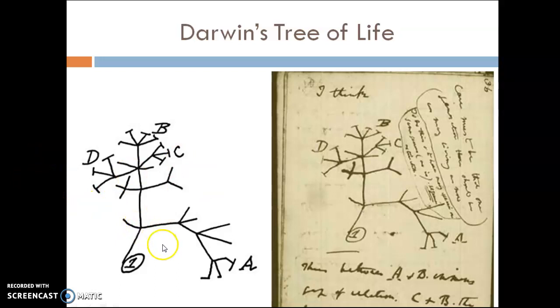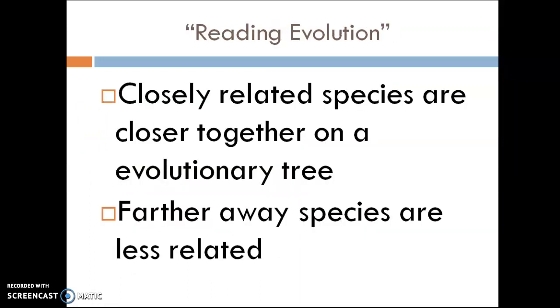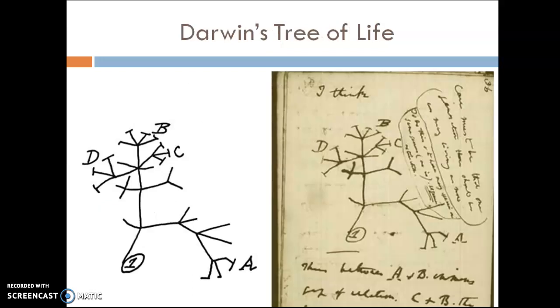So how to interpret this? It's sort of like a family tree where branches come off from common points. And we will look at that some more today here. So closely related species are together, closer together on a tree and further away would be less related. So if we go back here, we can see that B and C because they're closer in proximity, if we were to follow the branches of the tree would be more closely related than A and B.